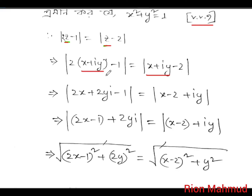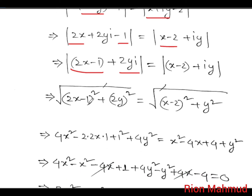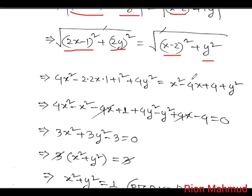Working on the real part and imaginary part: 2x plus 2y, and then x plus iy — real part equals x minus 1 and imaginary part is 2i. The modulus: the real part squared plus imaginary part squared gives 2x minus 1 whole square plus imaginary part 2y. Then x minus 2 whole square plus 2y.